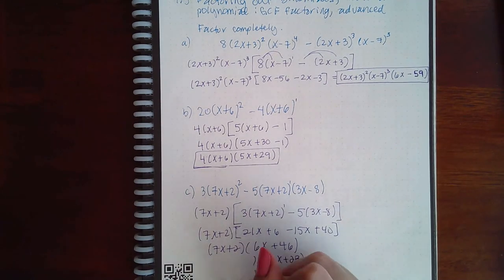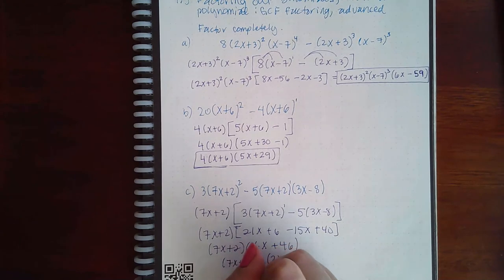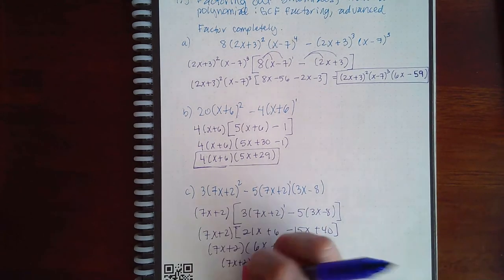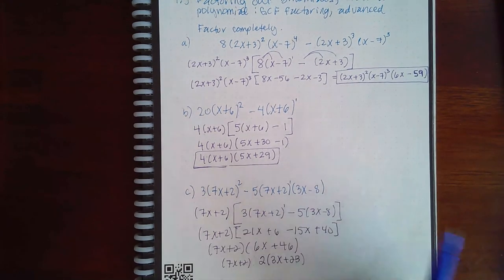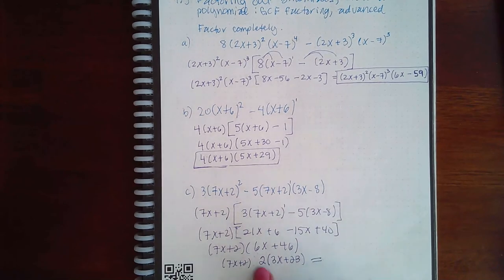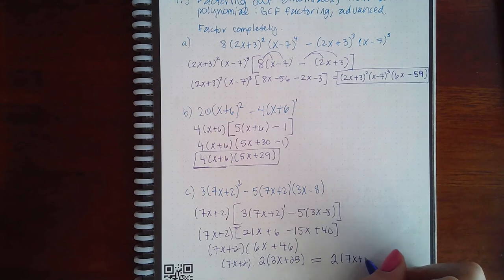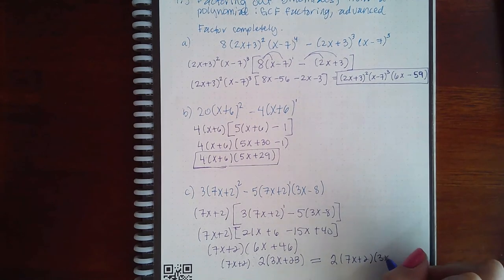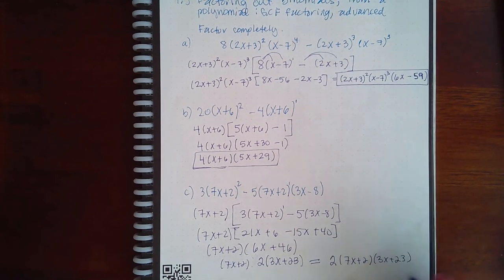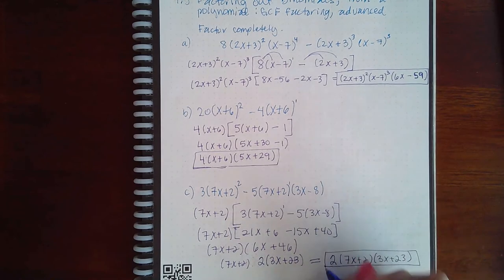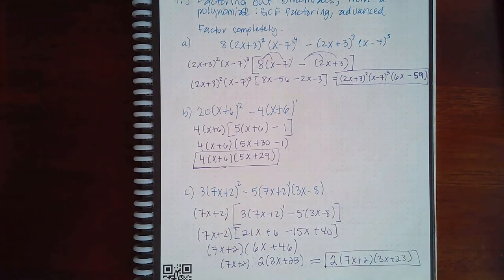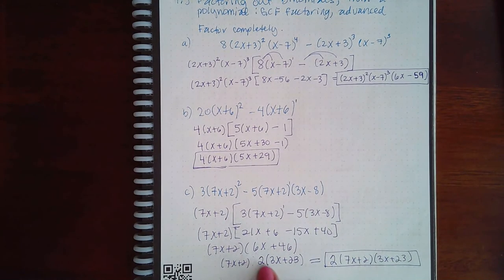But this is not a formal answer. For a formal answer, they always like your coefficients in the very, very front. So we'll put the 2 in the front, and then the 7x plus 2, and then the 3x plus 23. And this is the final answer.